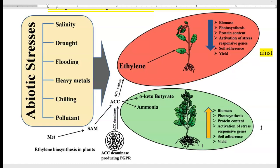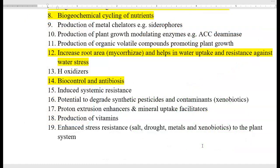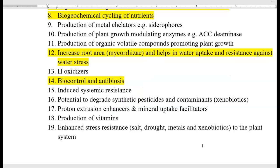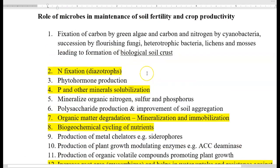The last point is enhanced stress resistance — against salt, drought, metals, and xenobiotics — imparted to the plant system with the help of microorganisms. For example, when Methylobacterium is sprayed on the leaf surface, it protects the plant against drought. More details will be covered under the topic of plant growth-promoting rhizobacteria. These are all the various roles played by microorganisms in maintaining soil fertility and crop productivity.